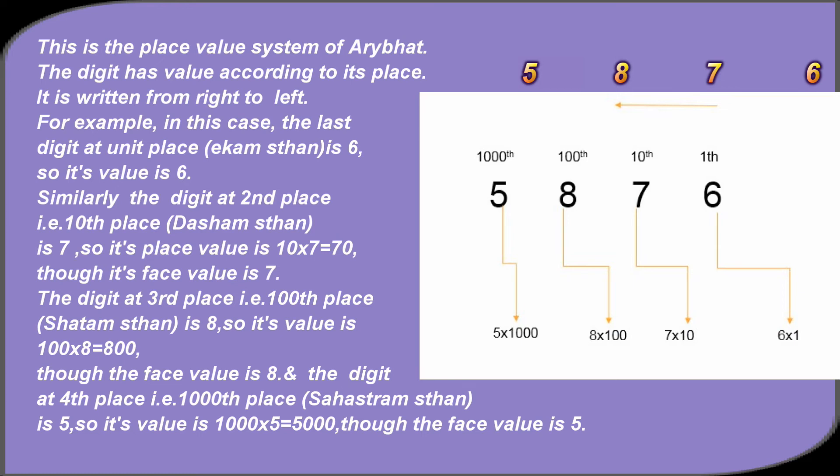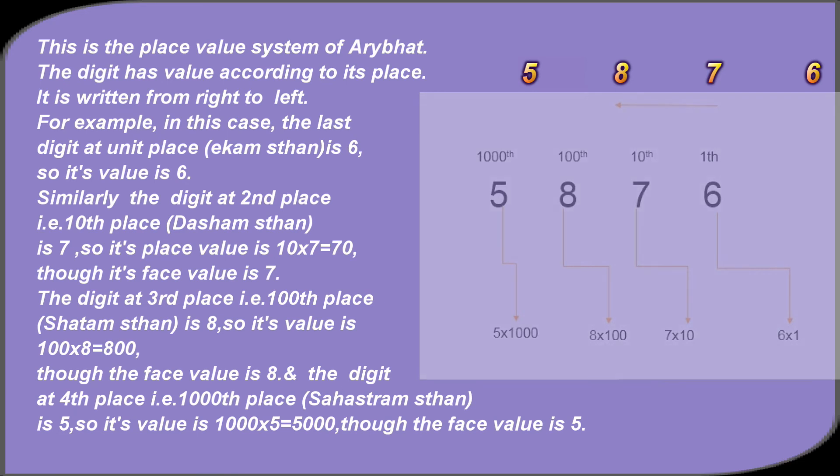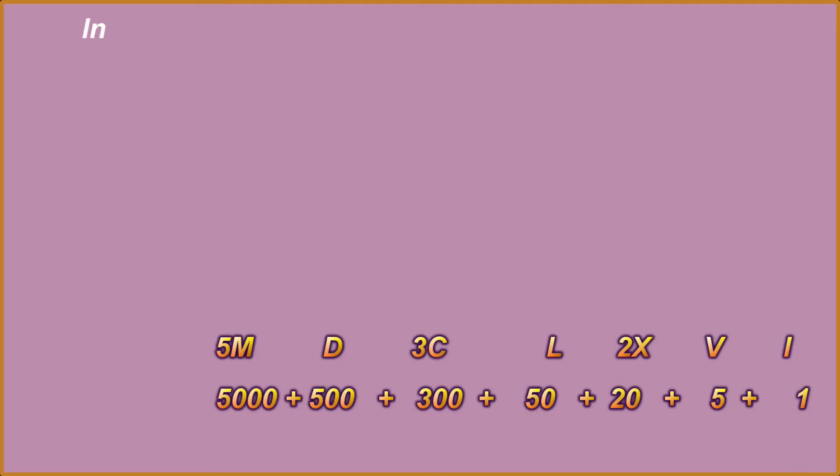The digit at third place, i.e. 100th place, shatam sthaan, is 8, so its value is 100 × 8 = 800, though the face value is 8. And the digit at fourth place, i.e. 1000th place, sahasram sthaan, is 5, so its value is 1000 × 5 = 5000, though the face value is 5.